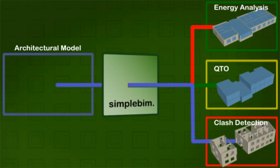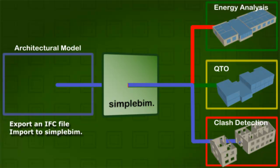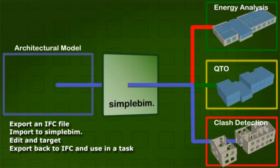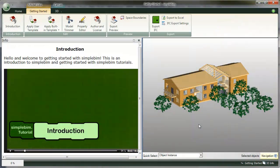All you need to do is export an IFC file from your modeling application or get it from your designer, import it to SimpleBIM, edit and target the file, and export and share it with other professionals. It's a small job, but it makes all the difference in the world of BIM exchange. Now let's see how this works.